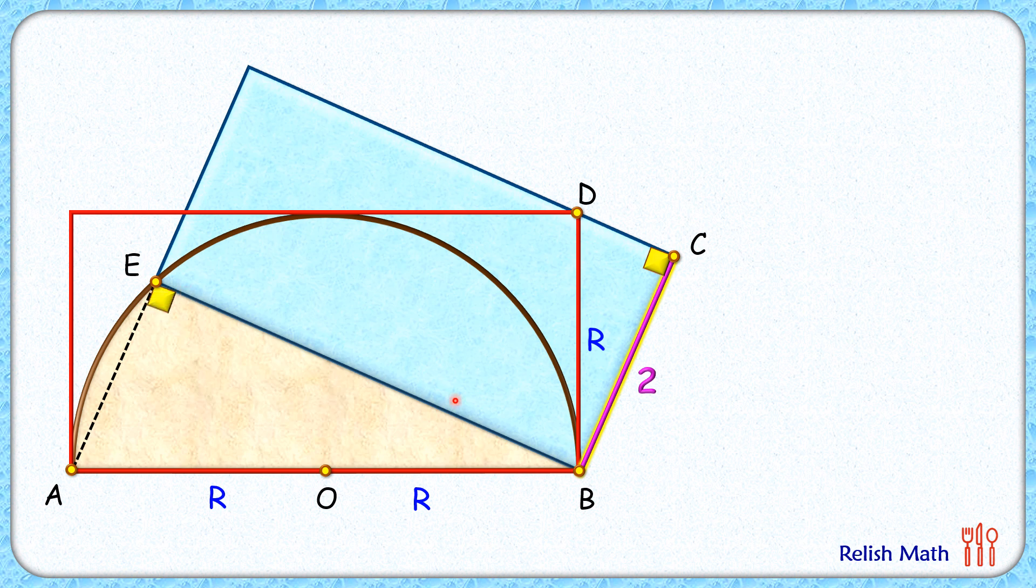Now here let's assume this angle is alpha degrees. This full angle here is the angle of a rectangle so it's 90 degrees and thus this remaining angle is 90 minus alpha. Again for the red rectangle this angle here is 90 and thus this remaining angle here will be the same as alpha degrees.